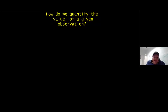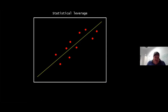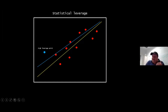To quantify the value of an observation, we used statistical leverage — a measure of how far away an observation's independent variable values are from those of the other observations. High leverage points are those at extreme or outlier values of the independent variable. Visually: if you have data points with a linear model fit, adding an outlier data point pulls the second model fit up substantially, making it a high-leverage point that changes the trend.